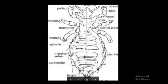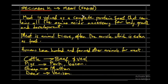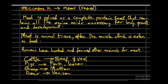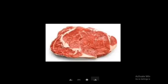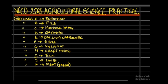Specimen K is meat. Meat is valued as a complete protein food containing all amino acids necessary for body growth and development. It is animal tissue, often muscle, eaten as food. Different animals produce different types of meat: cattle gives beef or veal, pig gives pork or bacon, sheep gives mutton, and deer gives venison. Humans have hunted and farmed animals for meat throughout history.